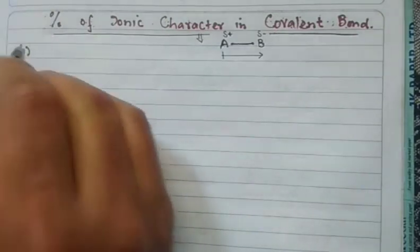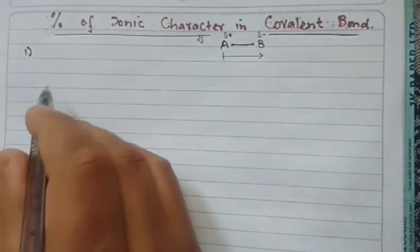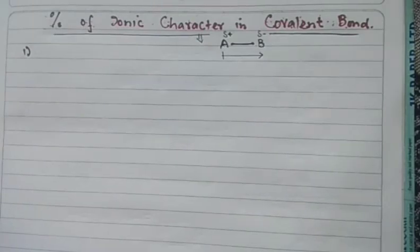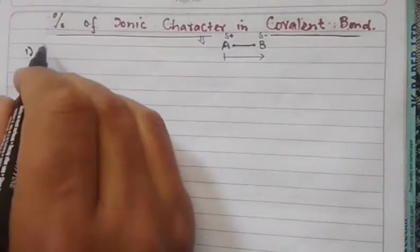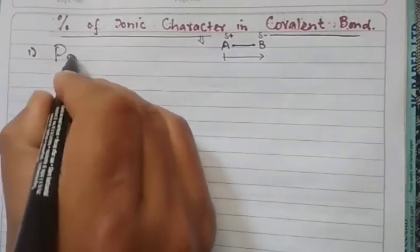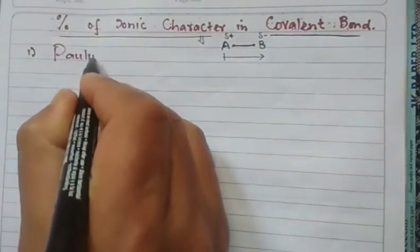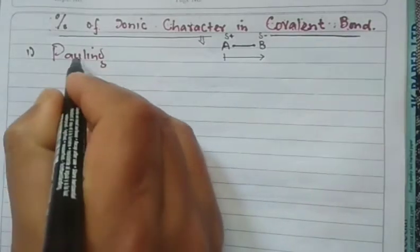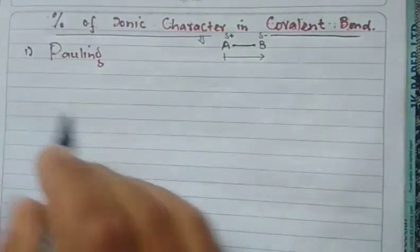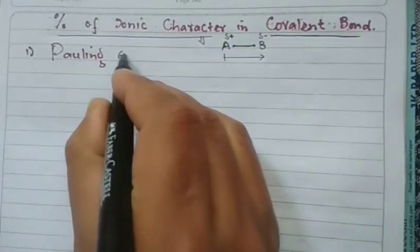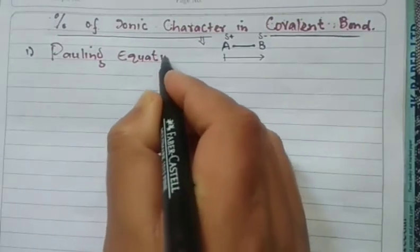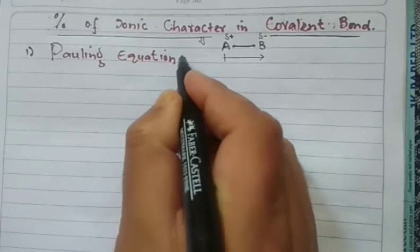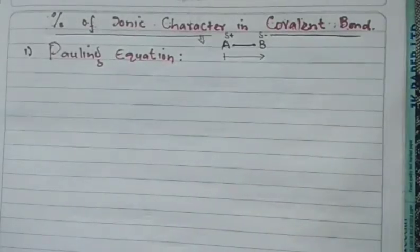Today we will discuss two important methods. Number one is Pauling's method, also called Pauling's equation. With the help of Pauling's equation or Pauling's method, we can calculate the percentage of ionic character in a covalent bond.